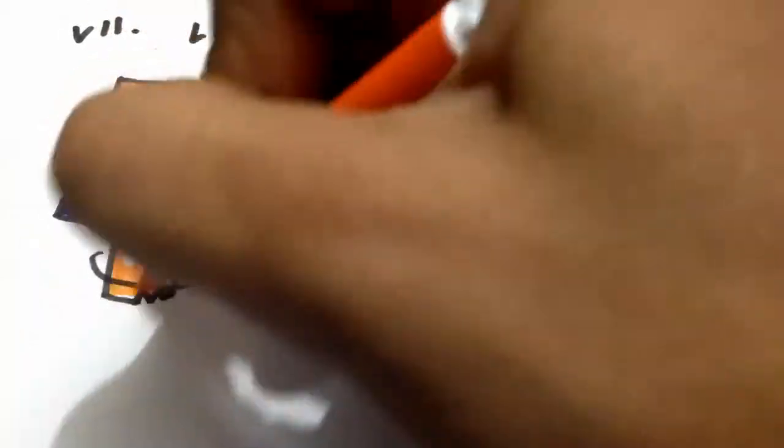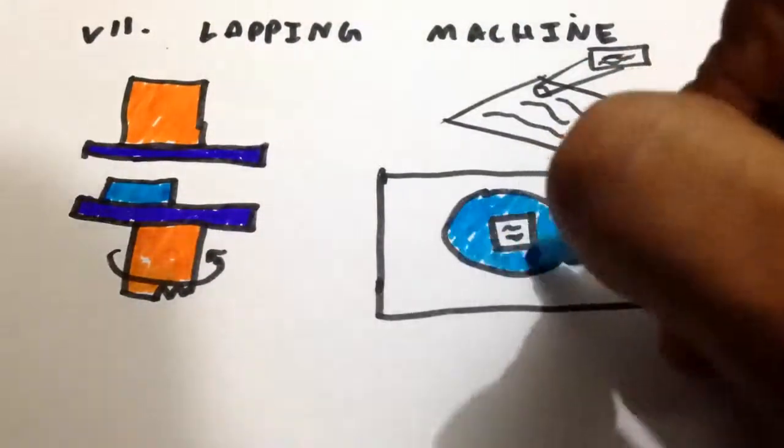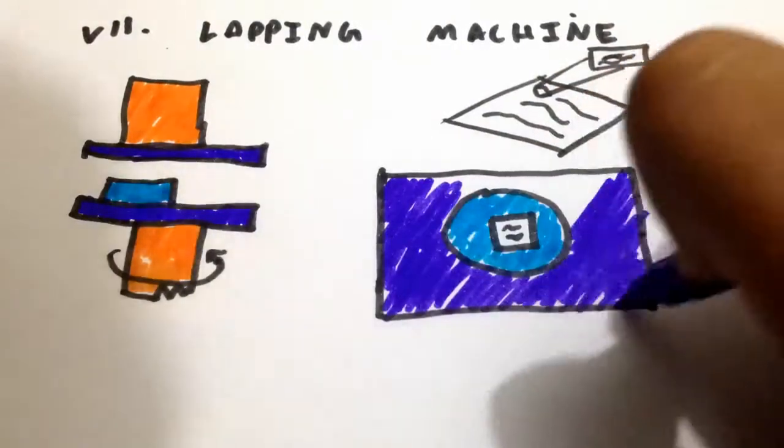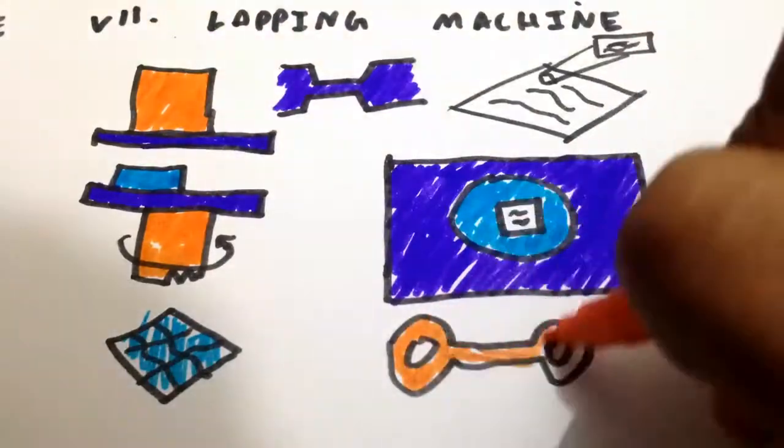A lapping machine normally consists of a stationary upper plate and a rotary lower plate. The workpiece is loaded into conditioning rings on the lower plate. Lapping is mainly used for smoothing engine walls, surface plates and crankshafts.